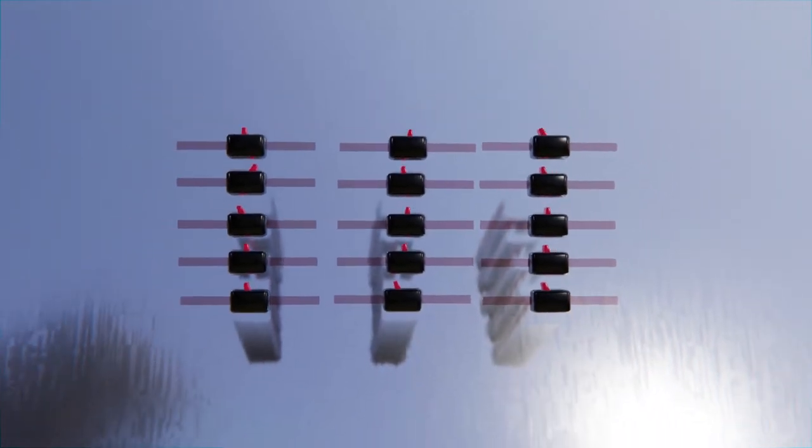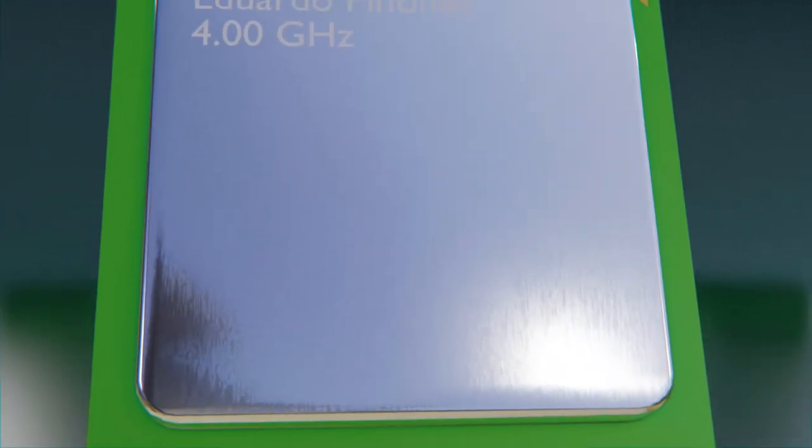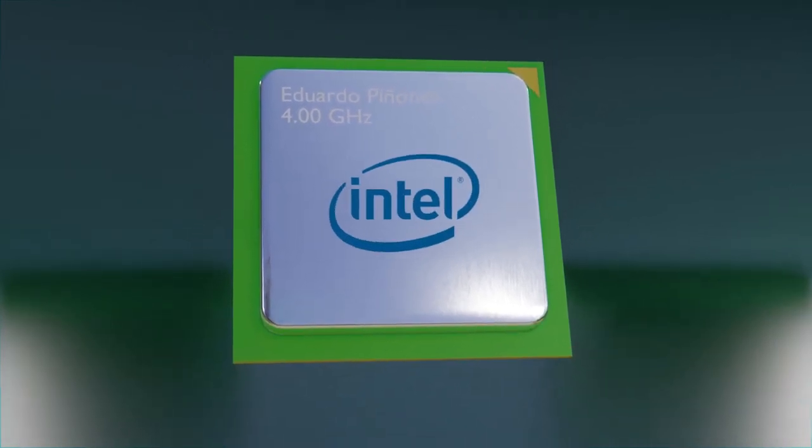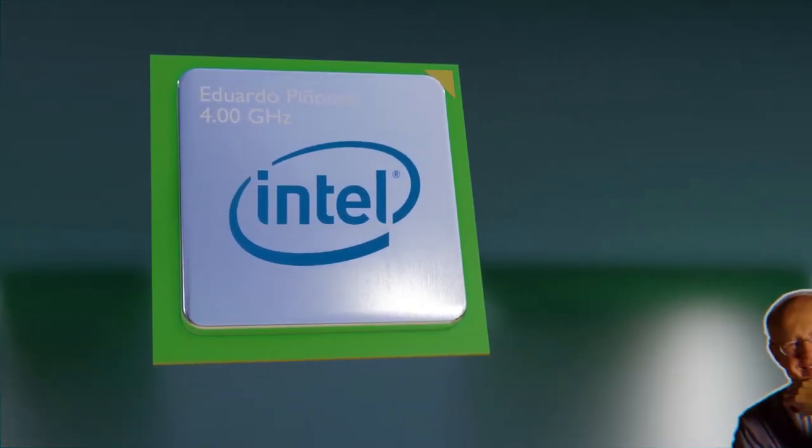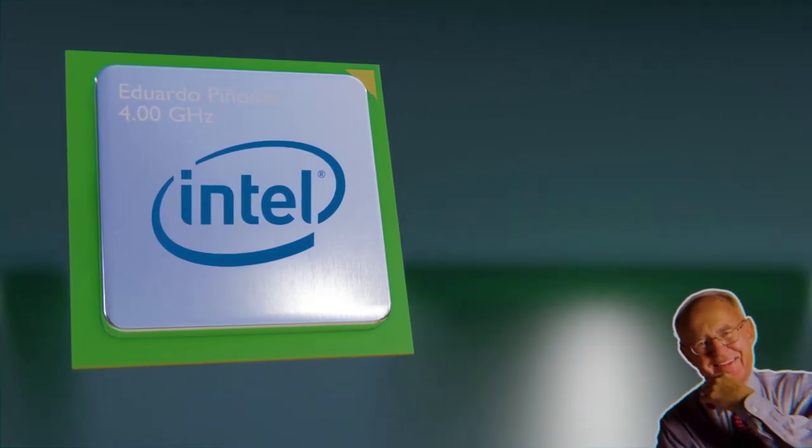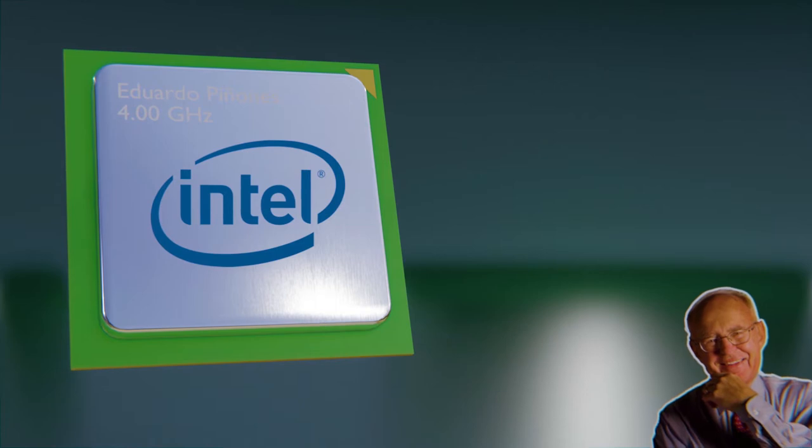In fact, the companies related to the development of processors focused so much on this optimization that the co-founder of Intel, Gordon Moore, stated in 1965 that the number of transistors per unit of surface in integrated circuits was doubling every year.